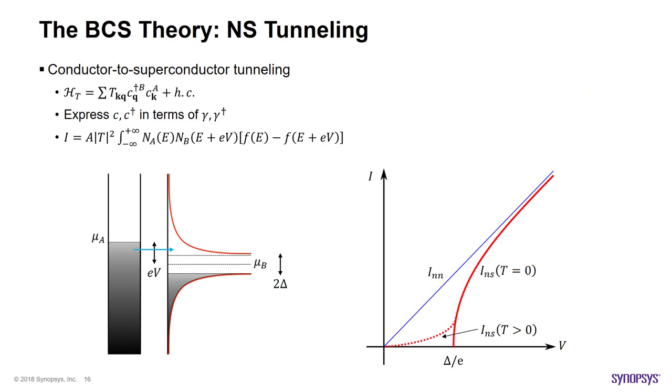Armed with the BCS theory, we can now look at various tunneling phenomena by looking at different material structures. Let's start by looking at a normal metal superconductor structure. The tunneling part of the Hamiltonian can be expressed in terms of annihilating a particle from metal A and creating a particle in superconductor B and its Hermitian conjugate. One thing we need to do is express the particle operators in a superconductor in terms of the gamma operators that we defined earlier. Having done this, we can express the current based on the tunneling probability, the density of states and the Fermi distribution on each side.